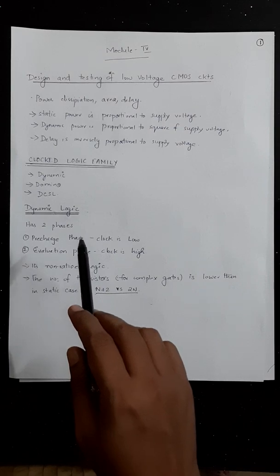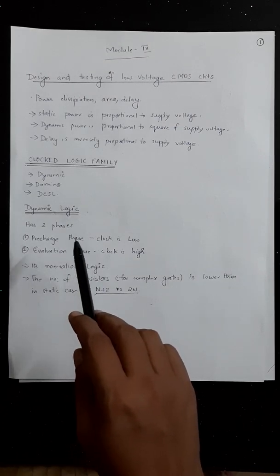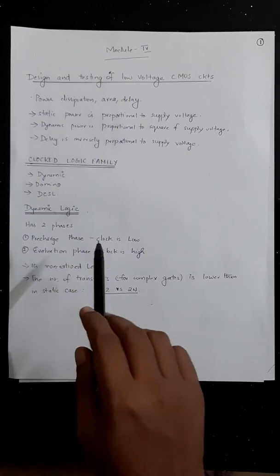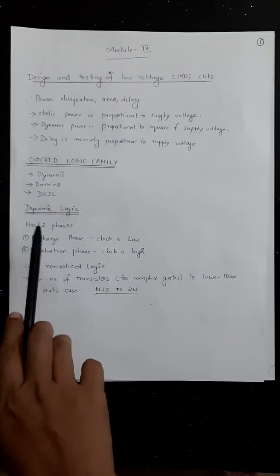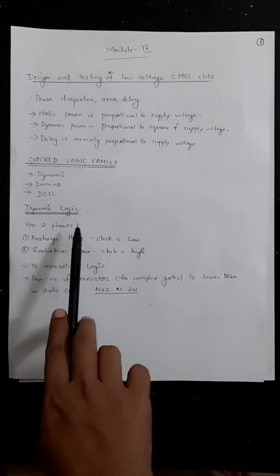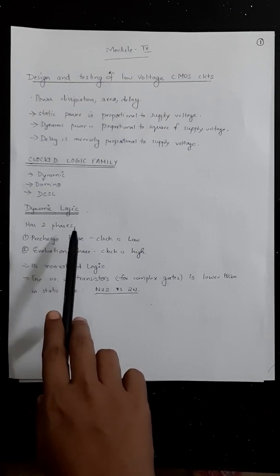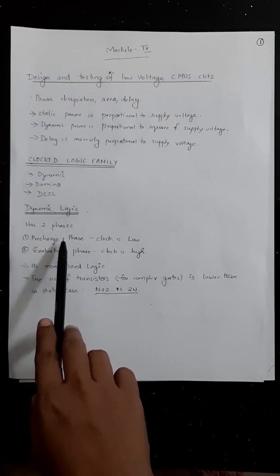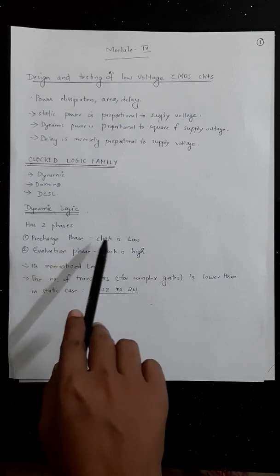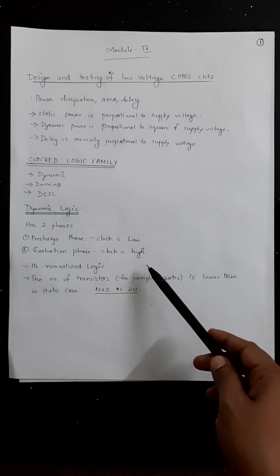In clocked logic families there are three types: dynamic, domino, and differential current switch logic. We'll be discussing dynamic and domino logic. Dynamic logic is a non-ratioed logic which has two phases: a pre-charge phase and an evaluation phase. In the pre-charge phase the clock is low; in the evaluation phase the clock is high.